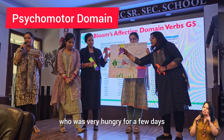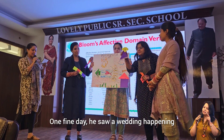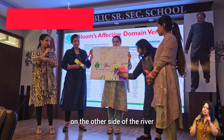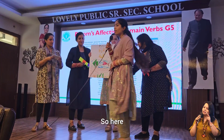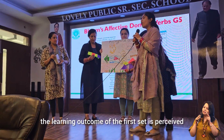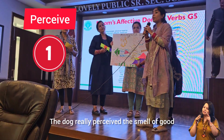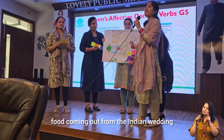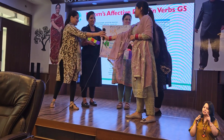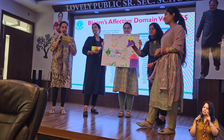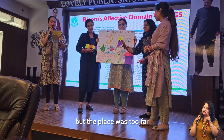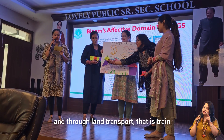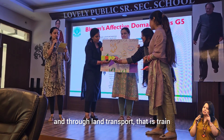The first step is the affective domain. A dog was very hungry for a few days. One fine day, he saw a wedding happening on the other side of the river. The learning outcome of the first step — perception — is that the dog really perceived the smell of good food coming from the Indian wedding. He could smell the food, but the place was too far. He got an idea to travel to the other side through land transport, that is, train.